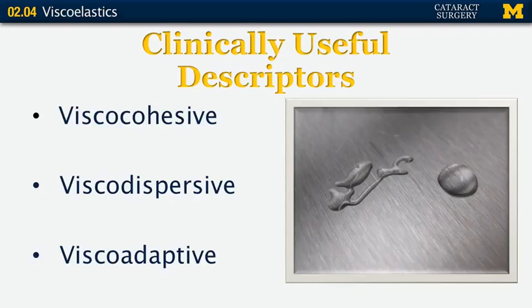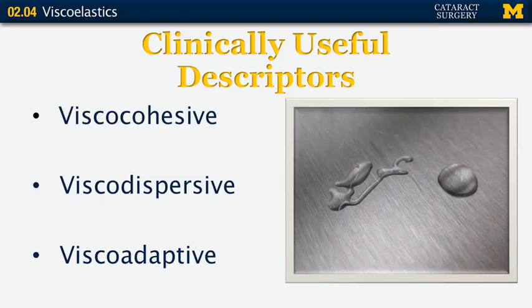Let's talk about some clinically useful descriptors for viscoelastics. A viscocohesive substance is highly viscous, basically through intermolecular interactions, entanglement, and intramolecular bonds. A viscodispersive substance has a low molecular weight, with lower intra- and interchain reactions, lower surface tension, and low pseudoplasticity. A viscoadaptive viscoelastic has both of those properties — at low shear rates it behaves as a viscous cohesive OVD, but at high shear rates the molecules fracture into smaller pieces and mimic the properties of a dispersive viscoelastic.